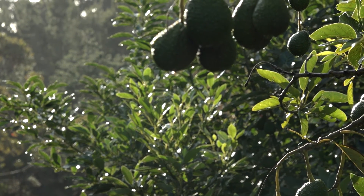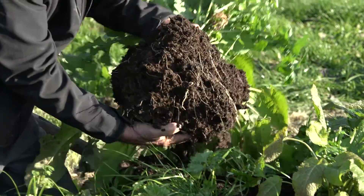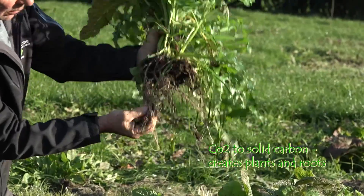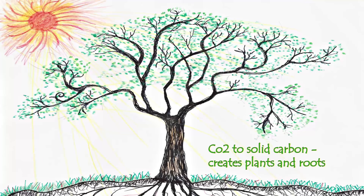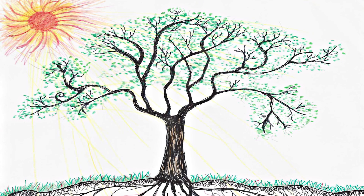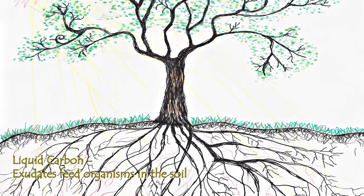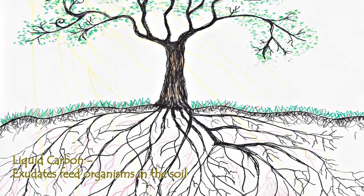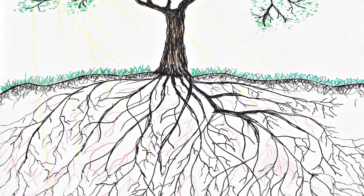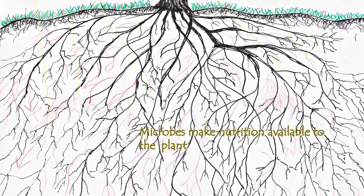The plant does this amazing thing called photosynthesis, where it turns carbon dioxide in the air into carbon in the plant and carbon in the root, which feeds the soil biology as it dies and breaks down. It also has another process where it converts carbon dioxide into a liquid carbon, which it turns into an exudate that pushes out into the soil and directly feeds the soil biology — the bacteria and fungi.